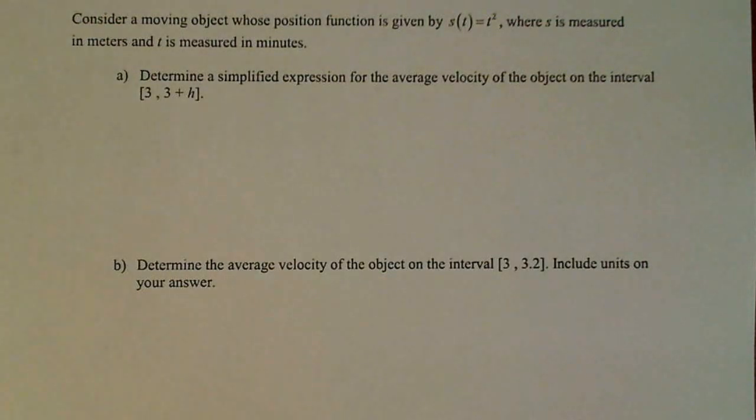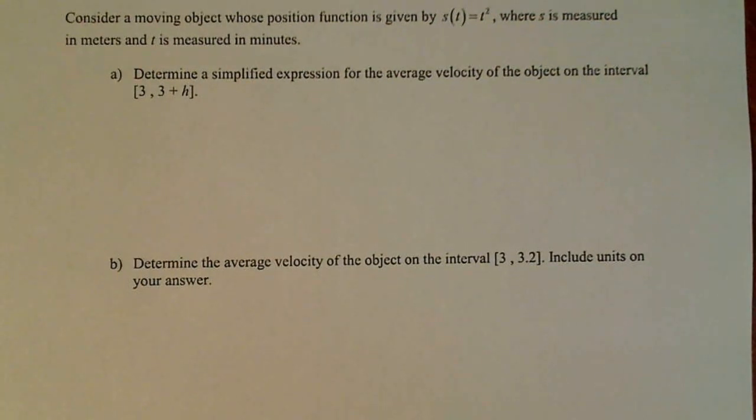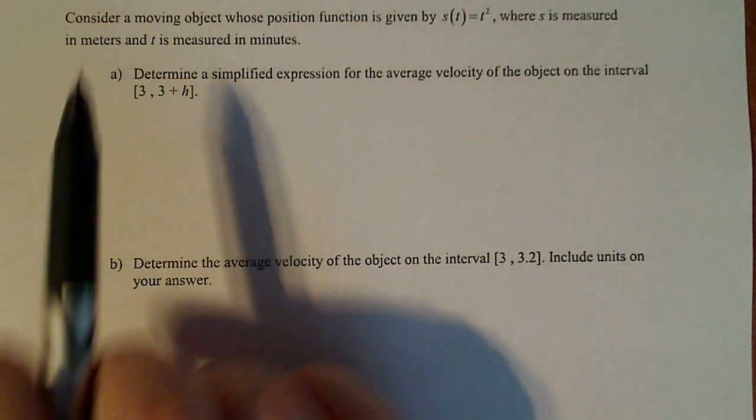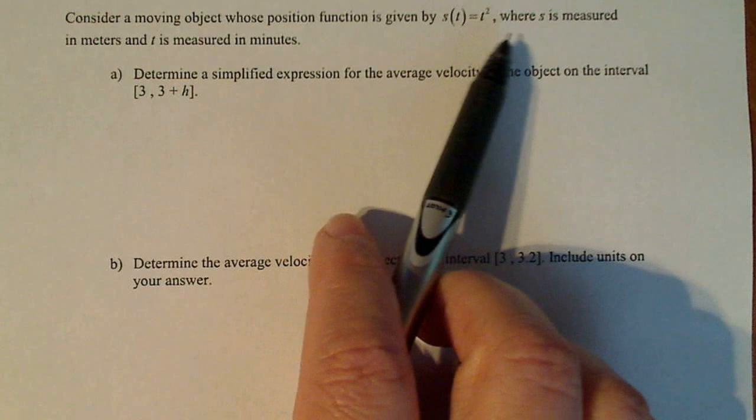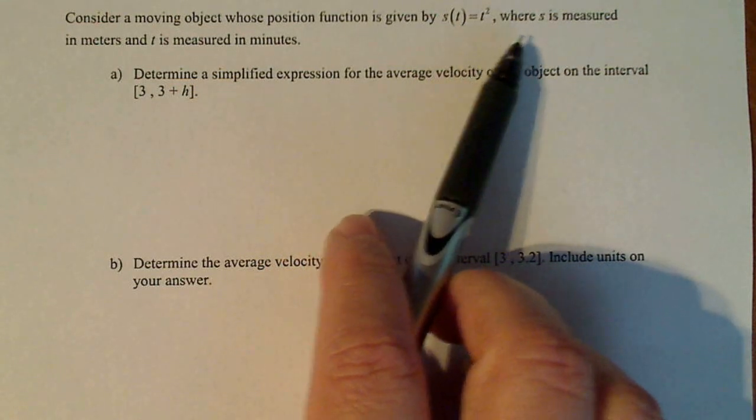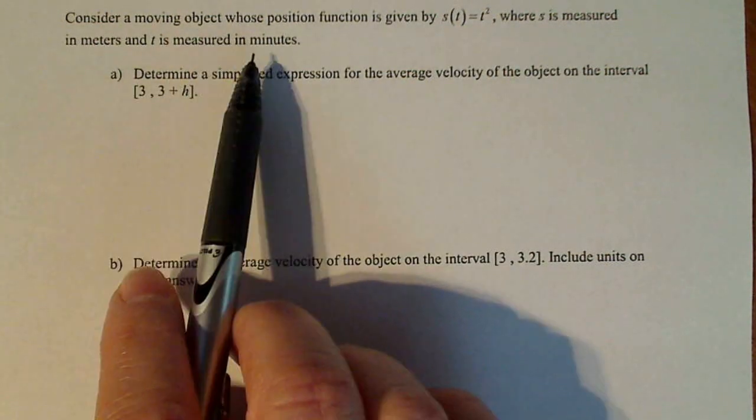All right, here's a problem that is an introduction to how average velocity and instantaneous velocity work together and how related they are. So we're given a moving object whose position function is given by s(t) = t², very straightforward, where s is measured in meters and t is measured in minutes.